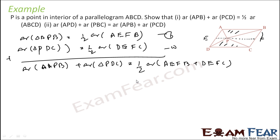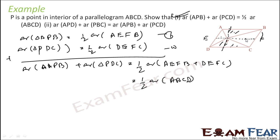If you join these, this diagram and this diagram, what you get is nothing but AC. So this part is done. For the second part, you have to prove that this triangle and this triangle area is also equal to this triangle and this triangle. I know that this triangle and this triangle area is equal to half of AC.